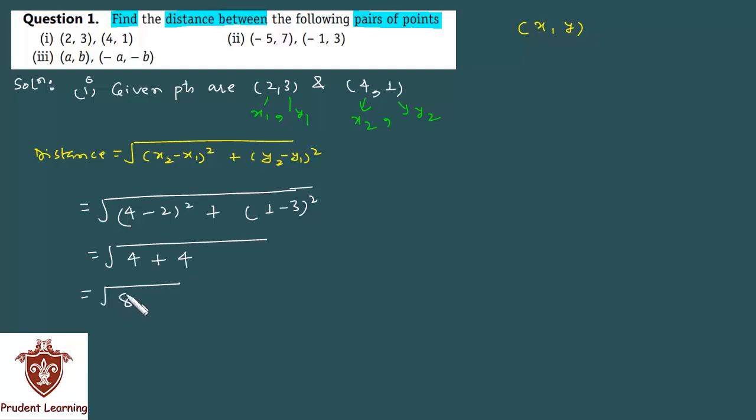4 plus 4 equals 8. And you can write 8 as 4 into 2, which gives you 2 root 2. The square root of 4 is 2, and 2 remains under the root. So finally, for the first section where you were given points 2,3 and 4,1, the distance between them is 2 root 2.